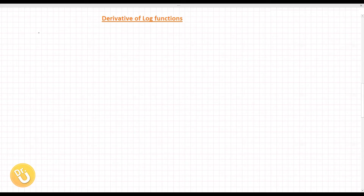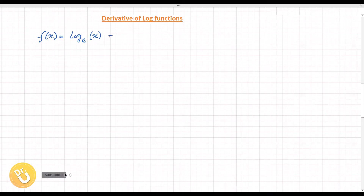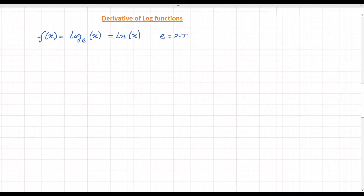First of all we will try to understand what is a log function. Let f(x) = log base e of x. The base of this log function is e. The short form for log base e of x is ln, so ln x means log base e of x. The value of e is 2.71, and this e is called Euler's number. It is a very important number in logarithms as well as in exponentials.